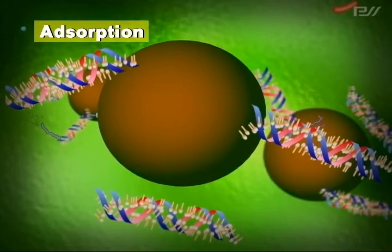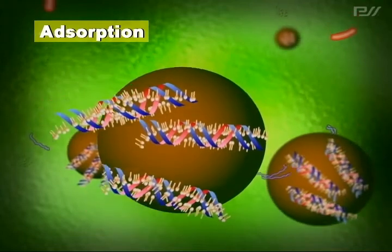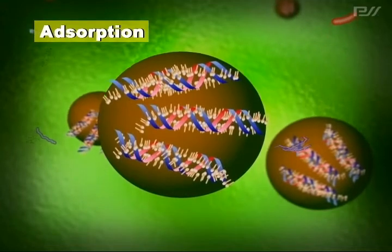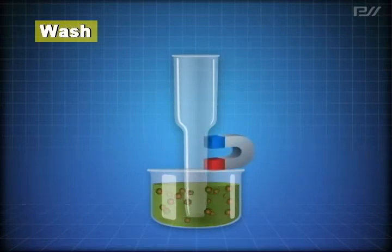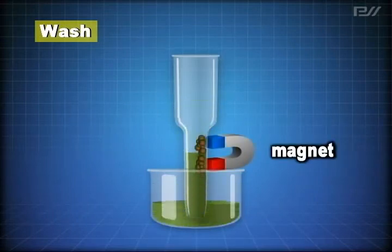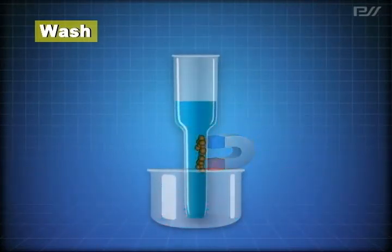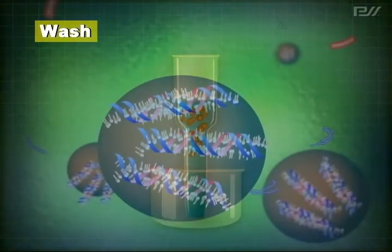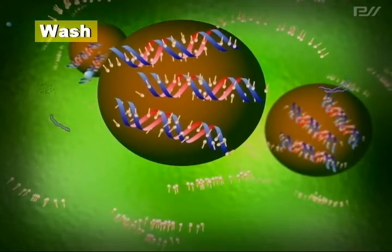Although the magnetic particles have absorbed DNA during this resuspension step, many impurities still remain. The magnet traps the magnetic particles to the tip wall, then the tip is moved to another well containing a washing solution, where the magnetic particles are washed with the same aspirating and dispensing actions. By repeating this process, impurities are removed from the magnetic particles.